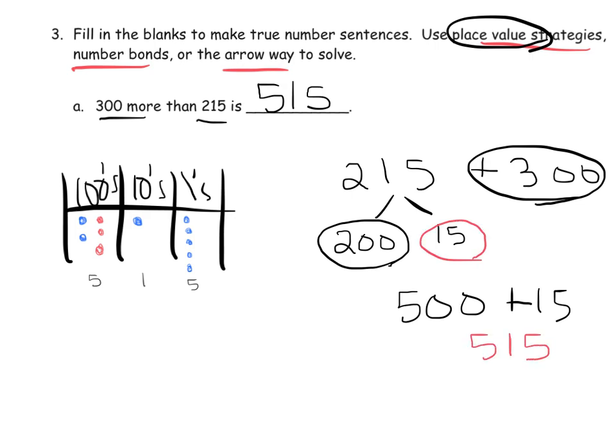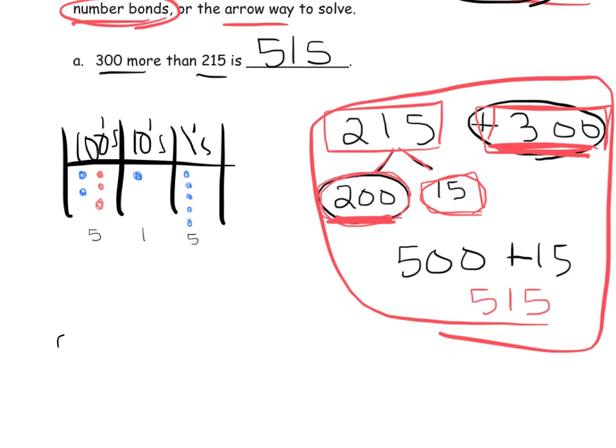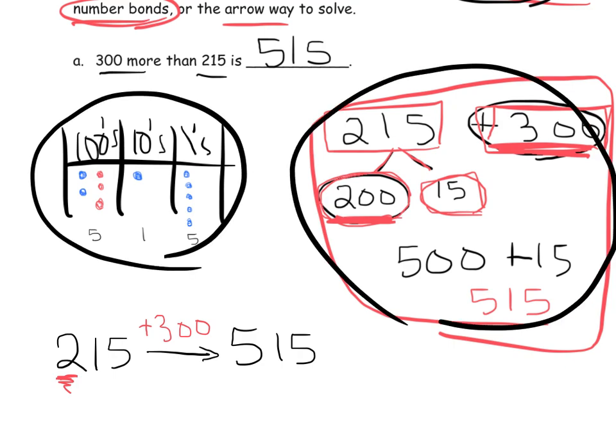So students can use place value. They can use number bonds or the arrow way. Really, the point is let the students develop familiarity with as many of these techniques as they can, but ultimately use the one that's most comfortable to them for this lesson. And I'm going to see if I can quickly show all three of those methods. So first off, the place value strategy. So we're going to start with our place value chart, hundreds, tens, and ones. And we're going to do 300 more than 215. So I'm going to zoom in, and we're going to model 215. So that's one 10 and five ones. Now, if we want to add 300 to that, that means we're just going to add 3 in the 100s column. So that ends up giving us 500, 1 10, five ones. So the answer is 515. So let's zoom out here. So that gives us 515. So that's one way.